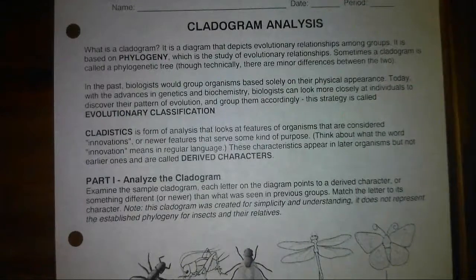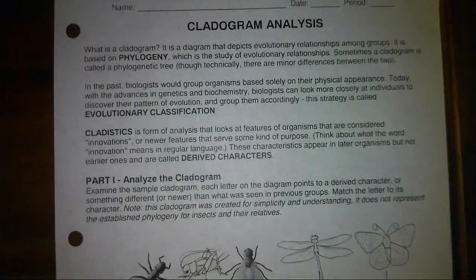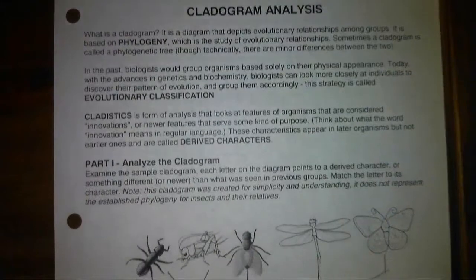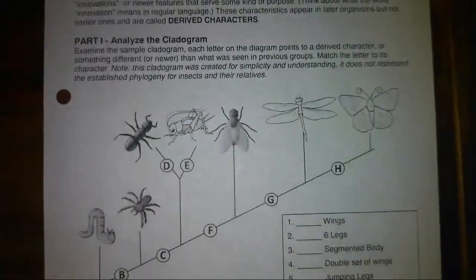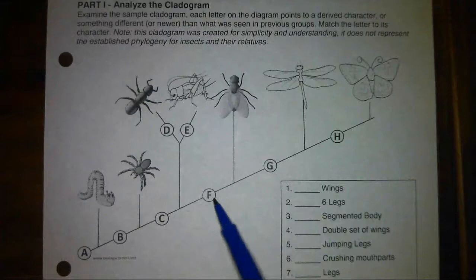This first video is going to give you an overview of what a cladogram is. At the top it says: what is a cladogram? It is a diagram that depicts evolutionary relationships among groups of organisms. Basically, a cladogram is not only going to show you organisms and how they branched off and how they're related, but it's also going to show you the traits that derived or evolved along the way.